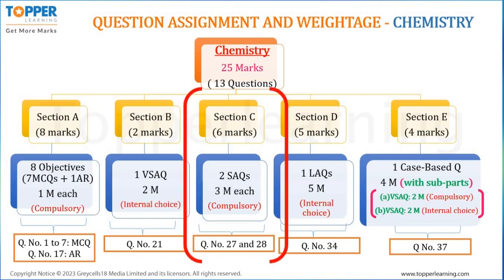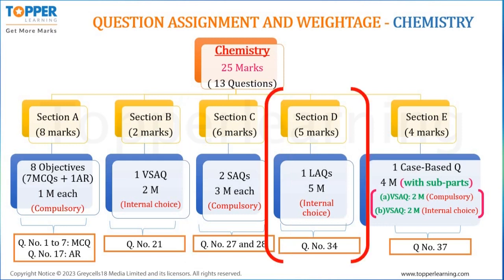In Section C, 6 marks are allotted to chemistry wherein 2 short answer questions of 3 marks each have to be answered. Both questions will be compulsory. Question number 27 and question number 28 will be the chemistry questions in Section C.